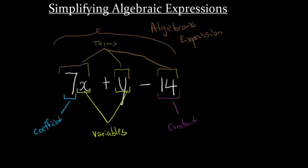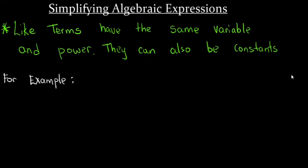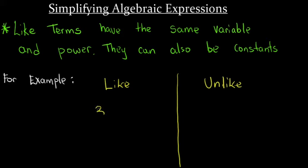These are some key terms we need to know when doing algebra. We have like and unlike terms. Like terms have the same variable and power. For example, if we have 3x and 4x, these would be examples of like terms, because the variable for both terms is the same.